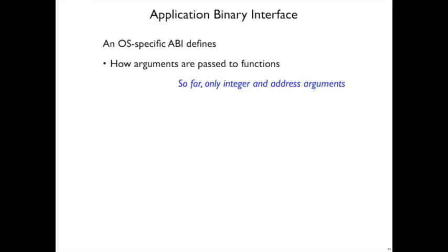Arguments that are floating-point numbers, there's some extra rules that we haven't talked about yet. And the ABI also specifies how results come back from functions. That is, in RAX, at least for integer and address results.